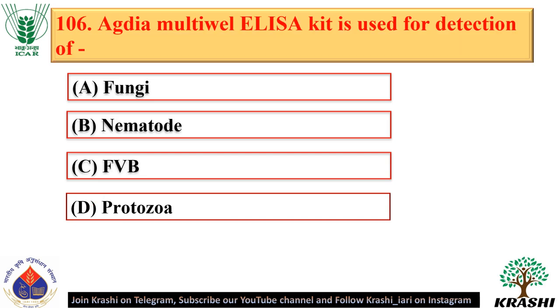Question number 106. Agdia multiwell ELISA kit is used for detection of FVB — French Lycuma virus B, named after its susceptibility in albino laboratory mouse strains.